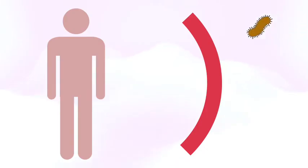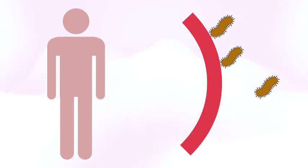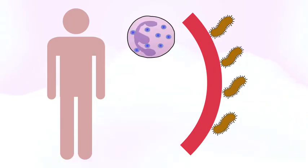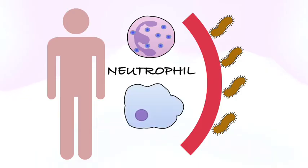In multicellular organisms, phagocytosis is an immune defense mechanism used to remove pathogens and cell debris. It is a nonspecific defense mechanism and involves specialized cells such as neutrophils and macrophages.